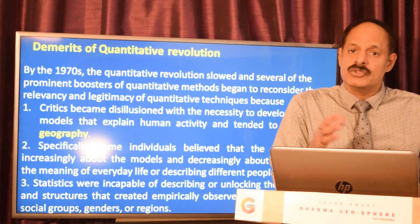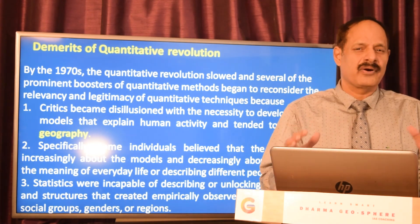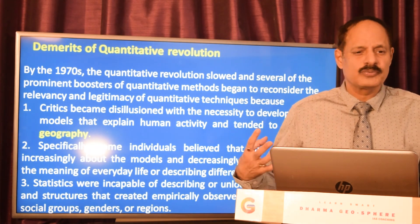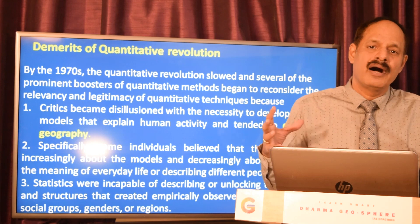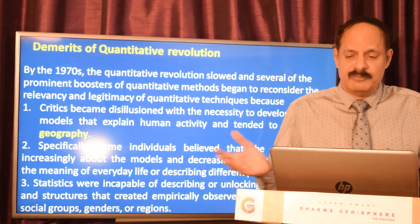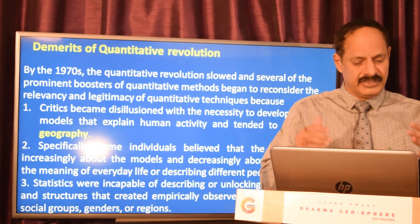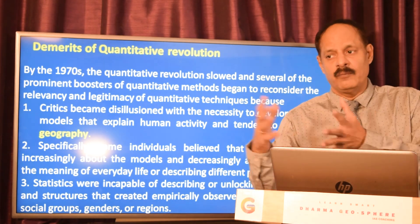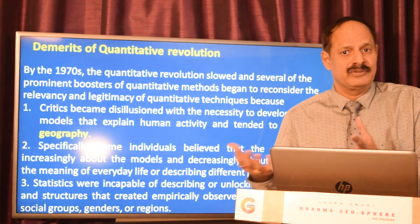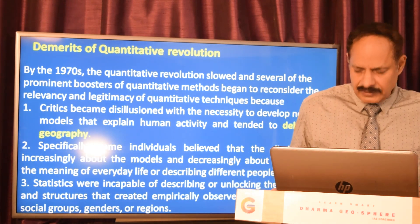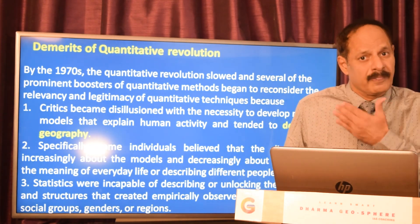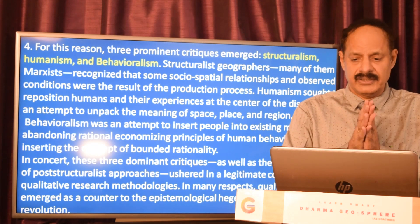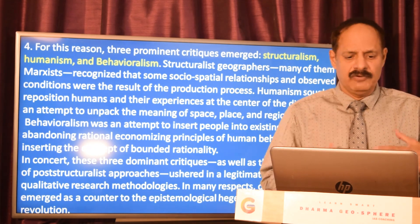The social groups aspect was neglected because there was no way of gender mainstreaming — you cannot have one particular theory and quantify it without understanding whether the beneficiaries are women or men. This was another drawback of blindly quantifying. For this reason, three prominent critiques emerged.